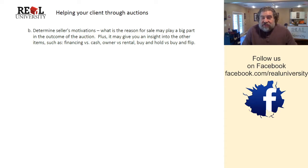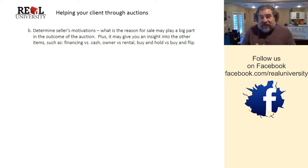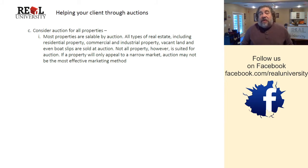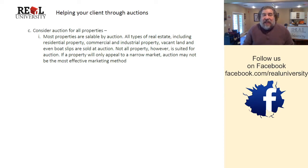Motivation can also play into financing type — is this going to be a cash deal where they need to close quickly, or can it be financed? Those are topics on why you'd want to know the seller's motivation. Now, in theory, all properties are auctionable. You can auction a single-family residence, a double, a quad, commercial properties — all of those can technically be held at auction. The seller's motivation may dictate whether it's auctionable more than the property type itself.